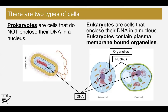In our bodies we have somatic cells and sex cells — we've learned about those. But in the world, among all living things on Earth, we can divide all cells into two types. We have prokaryotic cells — prokaryotes are cells that do not enclose their DNA in a nucleus.